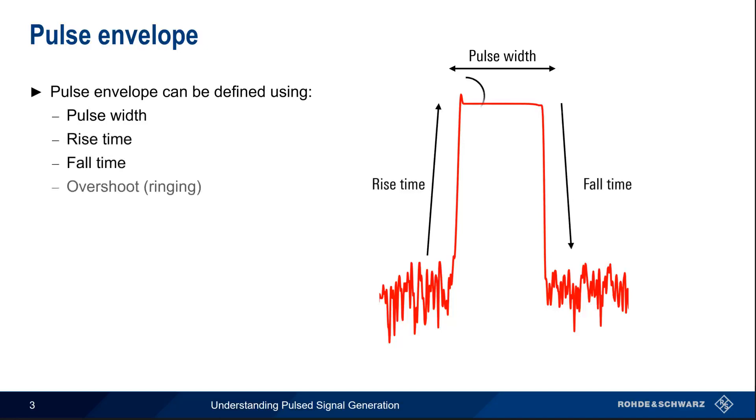Many pulses exhibit some level of overshoot or ringing, and there are additional parameters like droop, ripple, etc. that occur in real world pulses. In all cases, however, it's the specific application that determines which of these parameters need to be defined and their respective values.